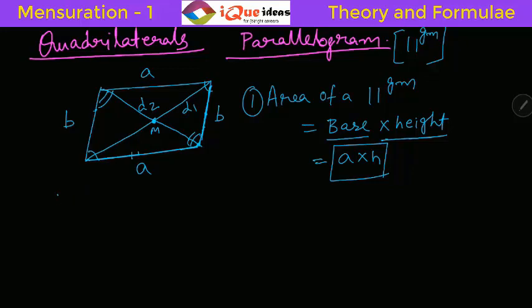So the first important property related to diagonals is that diagonals bisect each other. So in any Parallelogram, diagonals bisect each other. That's a very important property. So basically this M is the midpoint of D1 as well as the midpoint of D2.